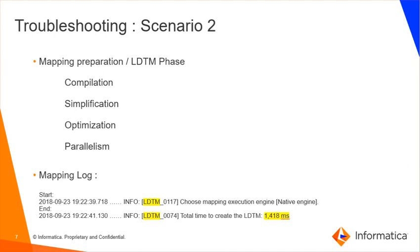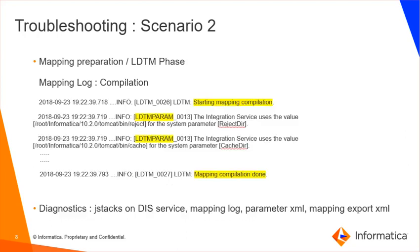If the LDTM phase takes very long to finish, we need to understand which sub-phase of LDTM took more time and what options are available to overcome the issue. The first phase of LDTM is to compile the mapping, which includes parameter resolution and other tasks. If the mapping log shows this phase takes more time to finish, rerun the mapping and collect multiple Infinispan dumps with the heap option on the DIS service at regular intervals during the compilation phase until it completes. Along with this, send the mapping log, mapping export XML, and parameter file for troubleshooting.